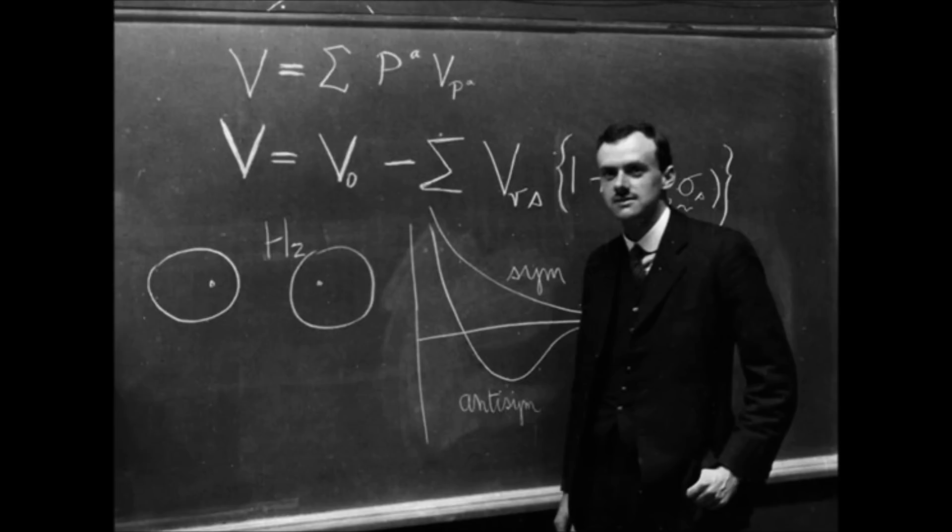There's another dimensionless number which connects Planck's constant and the electronic charge. You get a number which is about 137, quite independent of your units. When a dimensionless number like that turns up, a physicist thinks there must be some reason for it. Why it should be just 137 and not 256 or something quite different. And at present one cannot set up a satisfactory reason for it, but still people believe that with future developments a reason will be found.